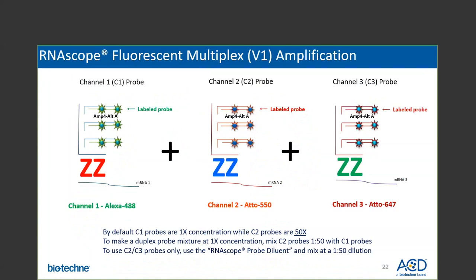The multiplex V1 assay utilizes the same amplification system as the duplex chromogenic assay. Three independent amplification trees are built, so the C1, C2 and C3 probes each have their own amplification trees stemming from where the probe has been hybridized to the specific mRNA transcript. The signal can then be visualized from the three independent fluorescent label probes.